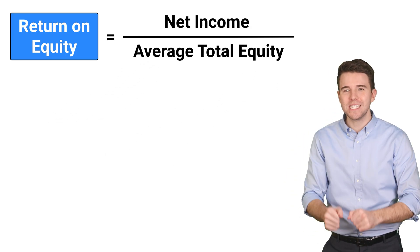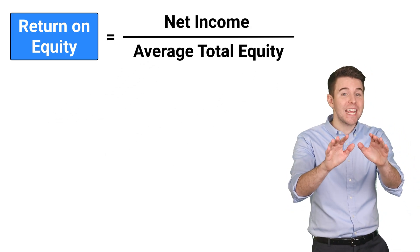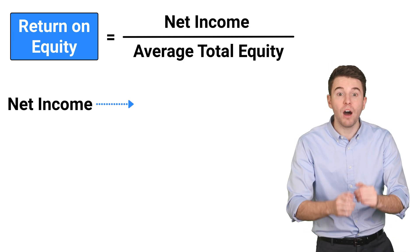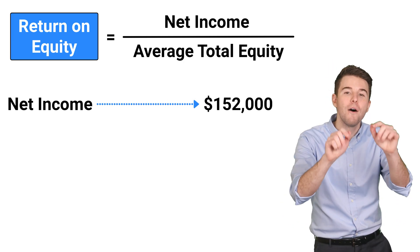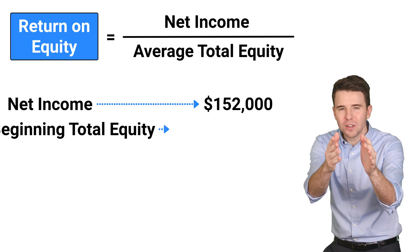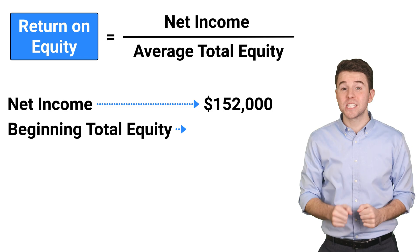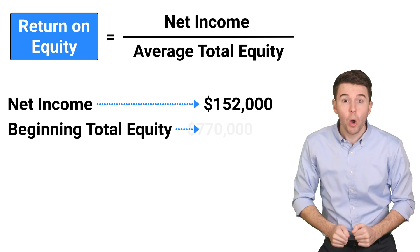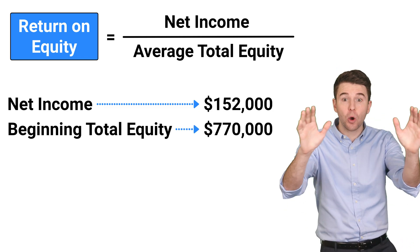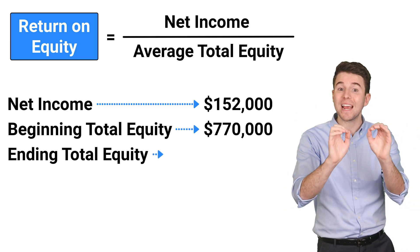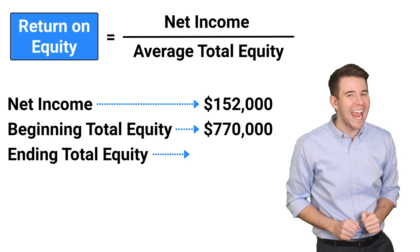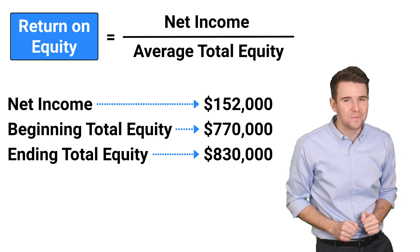Let's do an example and say a company reported net income of $152,000 for the current year. Total equity at the start of the year was $770,000, and total equity by the end of the year was $830,000.